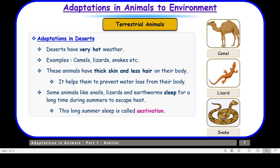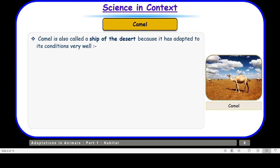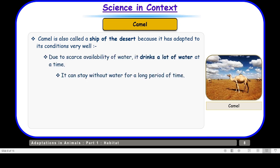Let us talk more about the ship of the desert. Camel is called the ship of the desert because it has adapted to its conditions very well. Due to scarce availability of water, it drinks a lot of water at one time and can then stay without water for a long period of time.